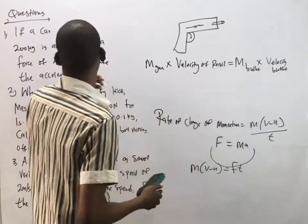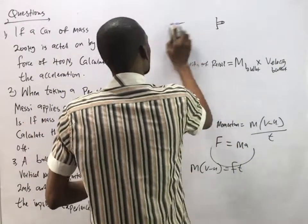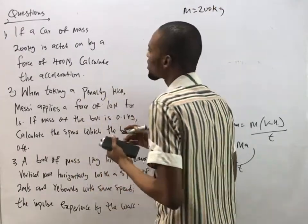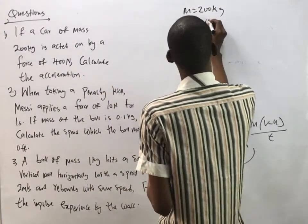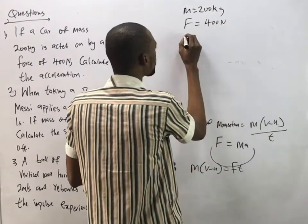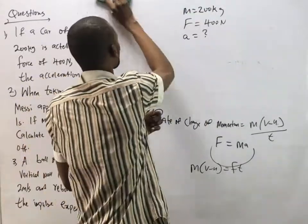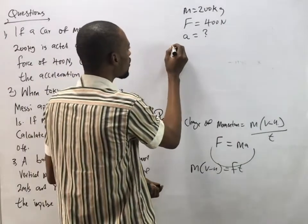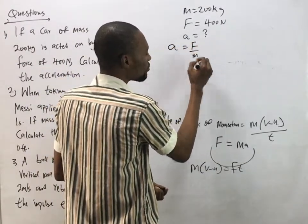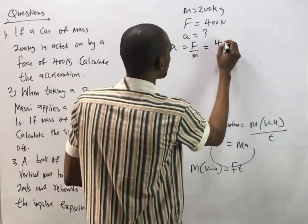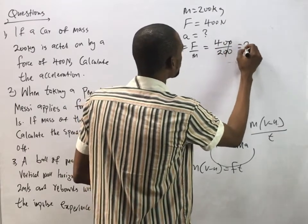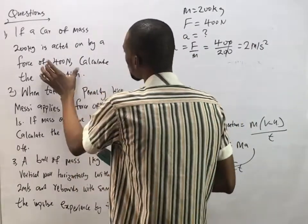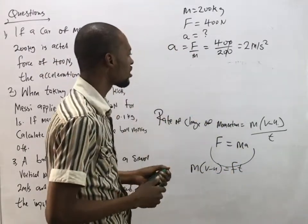Question 1: A car of mass 200 kg is acted on by a force of 400 N. Calculate the acceleration. Using F = ma, acceleration a equals F over m, which is 400 over 200, giving 2 meters per second squared.